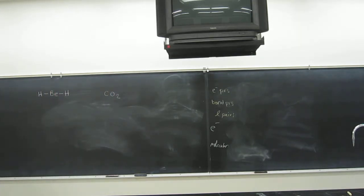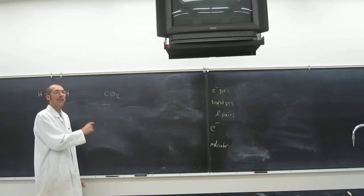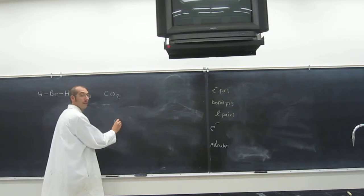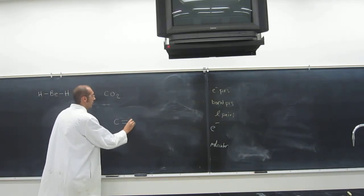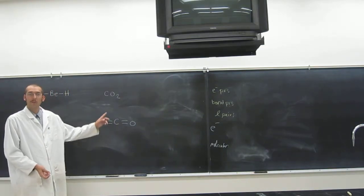Some of you have already done carbon dioxide. What do we know about carbon specifically? How many bonds does it like to have? Four. And how many bonds does oxygen like to have? Two. So how do you think this molecule is arranged? There are two double bonds — the carbon's in the middle, double bond to an oxygen, double bond to an oxygen, and there are two lone pairs on it.